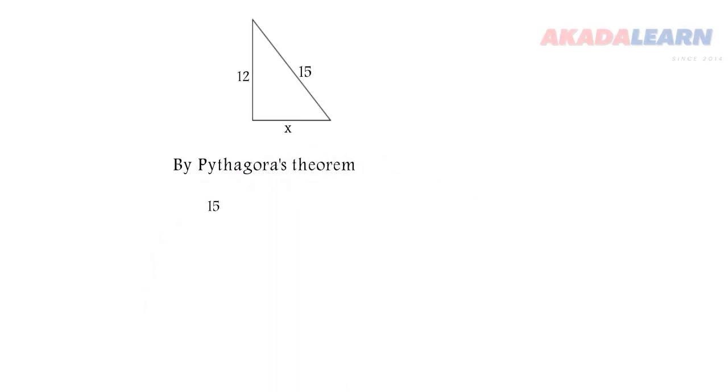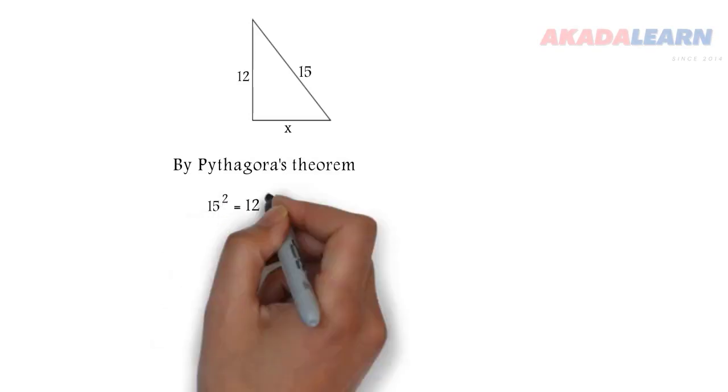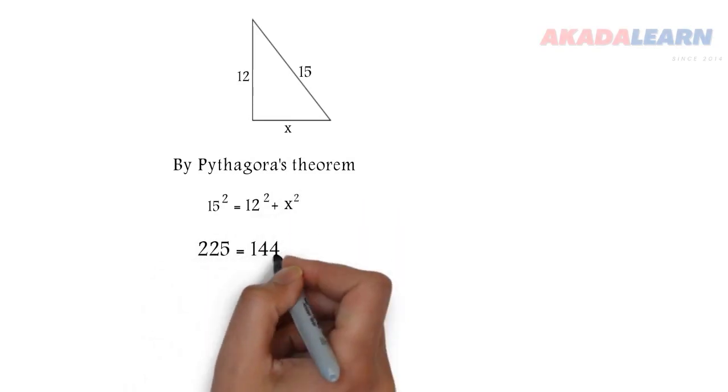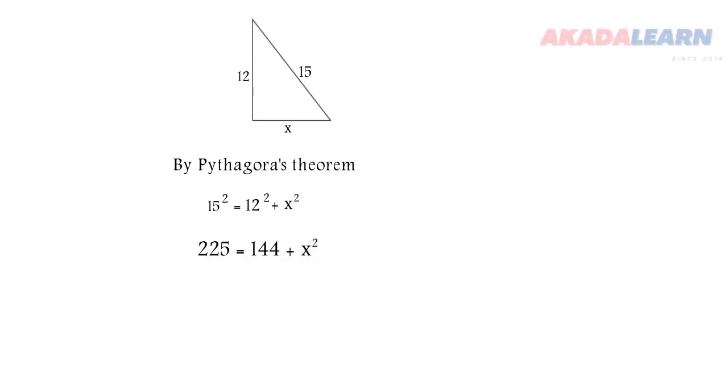The square of the hypotenuse: 15² = 12² + x². So 15² is 225, 12² is 144. Now we subtract 144 from both sides, so x² = 225 - 144, which is 81. We take the square root of both sides, and x equals 9. Thank you.